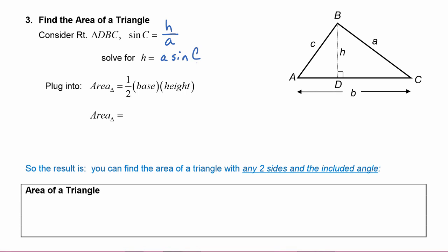Now remember from your geometry class that you can find the area of a triangle by doing one half of the base of the triangle times the height of the triangle. So what we're going to do is substitute in this a sine C for the height. Then the area of the triangle becomes one half, the base we can see over here is letter b, and the height is a times the sine of C.